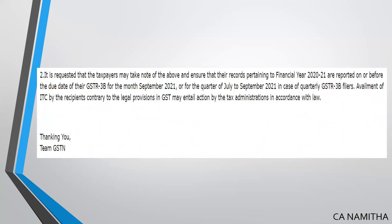Hence, it is requested that taxpayers take note of the above points and ensure that their records pertaining to the financial year 2021 are reported on or before the due date of their GSTR 3B for the month of September 2021 — that is, by 20th October in case of monthly filers, and 22nd or 24th October in case of quarterly filers, accordingly.